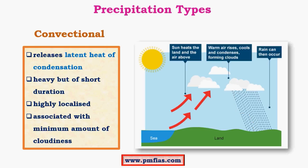The most important requirement for convectional rainfall is a good supply of heat — usually the sun is the chief source. In regions where there is a significant amount of sunlight, like in the tropical regions, convectional type rainfall becomes very significant. Convectional rainfall occurs for a very short duration but in the form of torrential rainfall — drops will be of considerable size and rainfall very heavy, but it occurs for only a short duration. It is also highly localized — the clouds don't spread over a large area, so the rainfall occurs over a very small region.